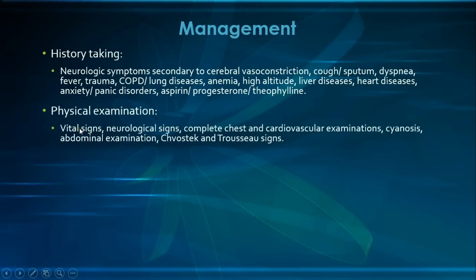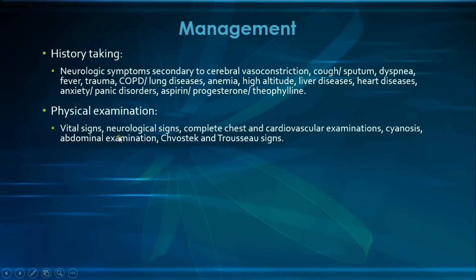For physical examination, we start by measuring the vital signs. We would expect the respiratory rate to be above 16 breaths per minute, and we are also interested in heart rate, temperature, and blood pressure, all of which aid in the differential diagnosis. Then we assess the patient for any obvious neurological signs such as syncope, seizures, or decreased level of consciousness, and a GCS would be required.